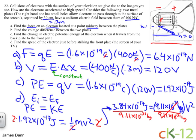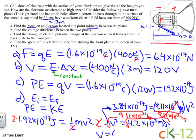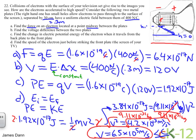We get v squared equal to 4.2 times 10 to the 13th, with units of meters squared per seconds squared. Taking the square root of both sides, we get our final answer: v is equal to 6.5 times 10 to the fifth meters per second. One way to check if this is reasonable is that it is less than the speed of light, as it must be — so it's a reasonable answer. The speed of the electron when it hits the screen is 6.5 times 10 to the fifth meters per second.